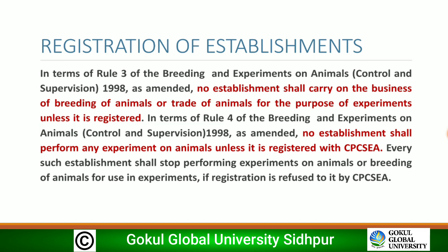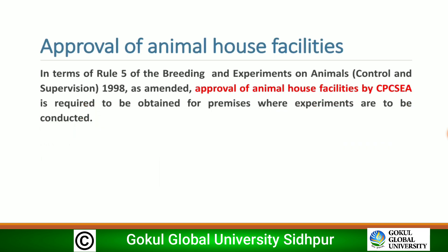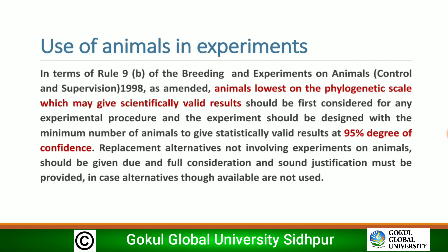Every establishment performing experiments on animals or breeding animals for use in experiments must be registered; registration will be refused by CPCSEA if conditions are not met. Under Rule 5 of the Breeding and Experiments on Animals Rules 1998 as amended, approval of animal house facilities by CPCSEA is required before proper experiments can be conducted.